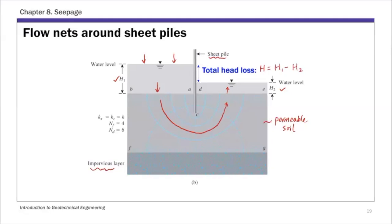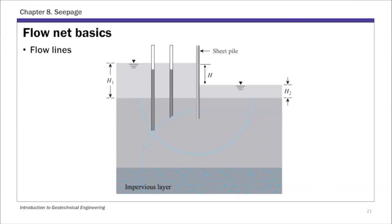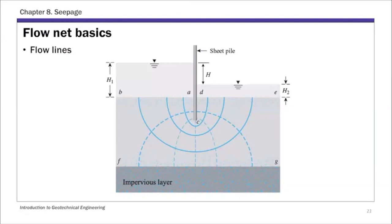Now for some basic definitions of flow nets. The first family of lines is called flow lines. Water travels from upstream — the higher water table side — to downstream along these flow lines. Using this flow net picture around the sheet pile, this solid line is a flow line. For the complete flow net, all these solid lines are flow lines — water travels from upstream to downstream along them.